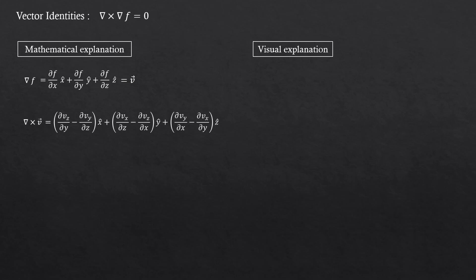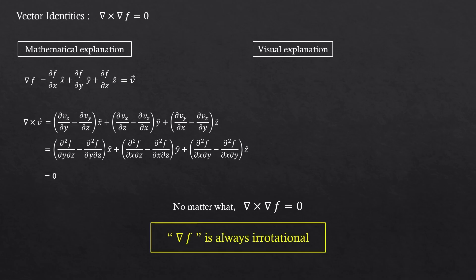Now, if you're taking the curl of that vector, then we can write it like this. And you see, each term cancels itself out and disappears. I haven't defined this function f, and we got zero. This means it doesn't matter what that function is. No matter what, the curl of the gradient of a scalar function always gives us zero.